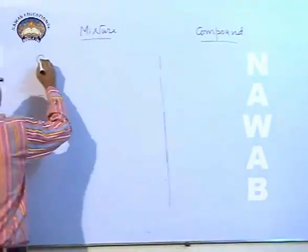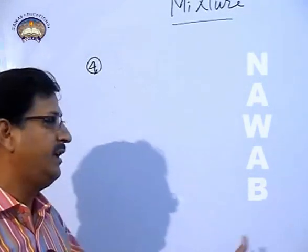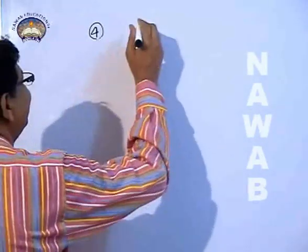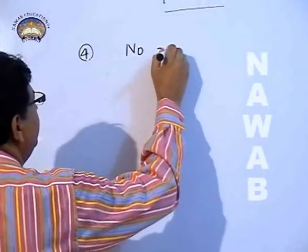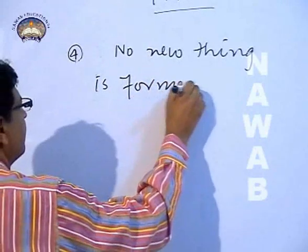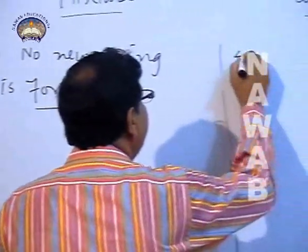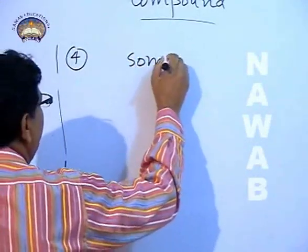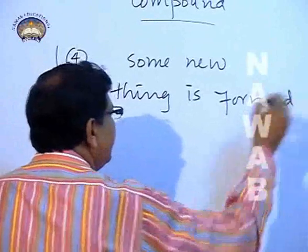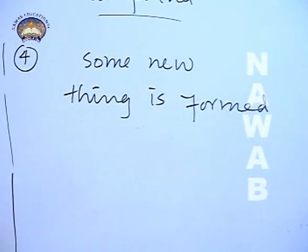The fourth difference between mixture and compound is: when we make a mixture, no new substance is formed — all components keep their properties. While in a compound, a new substance is always formed that is physically as well as chemically totally different from its components.